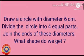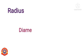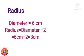Look at this activity. Draw a circle with diameter 6 cm. Divide the circle into 4 equal parts. Join the ends of these diameters. What shape do we get? At first, we have to find the radius of this circle. We know that diameter equals 6 cm. The formula to find the radius is: radius equals diameter divided by 2. That is, 6 cm divided by 2 equals 3 cm. Radius equals 3 cm.